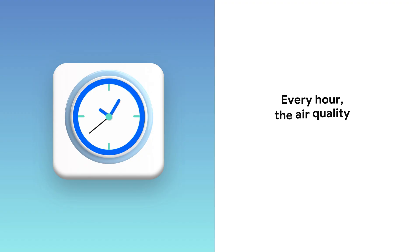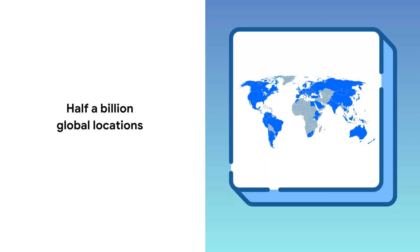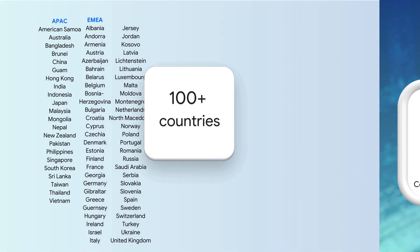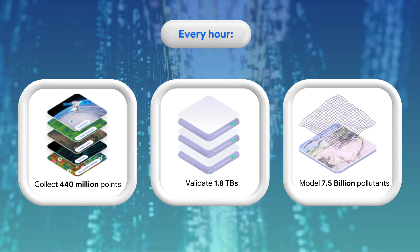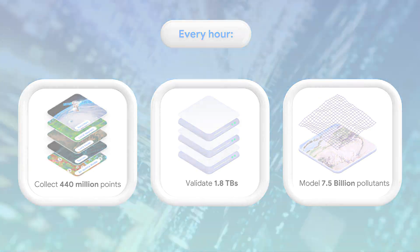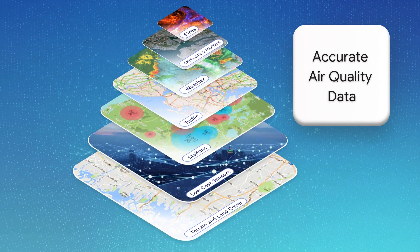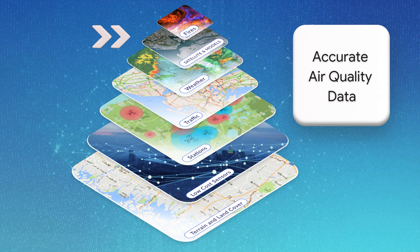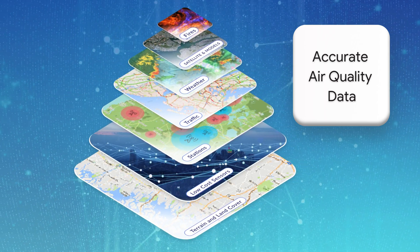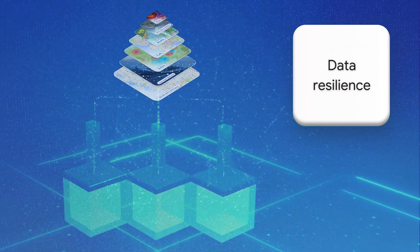Every hour, the air quality is calculated. We validate and organize several terabytes of data each hour from multiple data sources, including government monitoring stations, low-cost sensors, meteorological data, satellites, land cover and live traffic information. This approach allows us to collect information even when one source becomes unavailable.